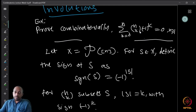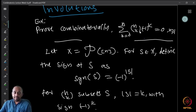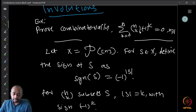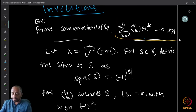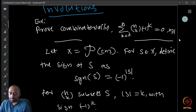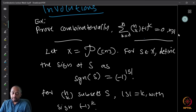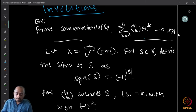Now we look at a slightly different topic called involutions — a very brief introduction. We will look at a single example, formally define it, and then stop. Suppose you are asked to prove combinatorially that Σ_{k=0}^{n} C(n,k)·(−1)^k = 0 for n ≥ 1. We already have a couple of proofs of this, but now let us prove it using involutions.